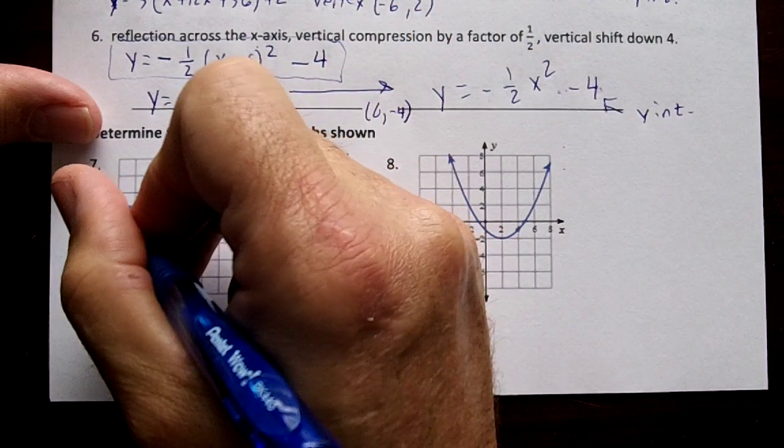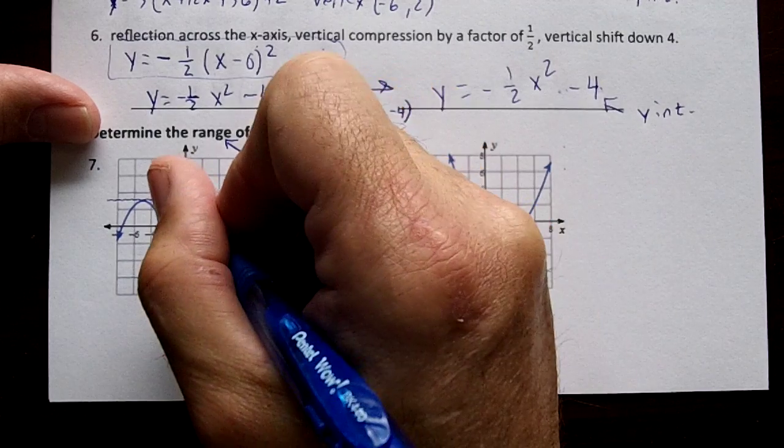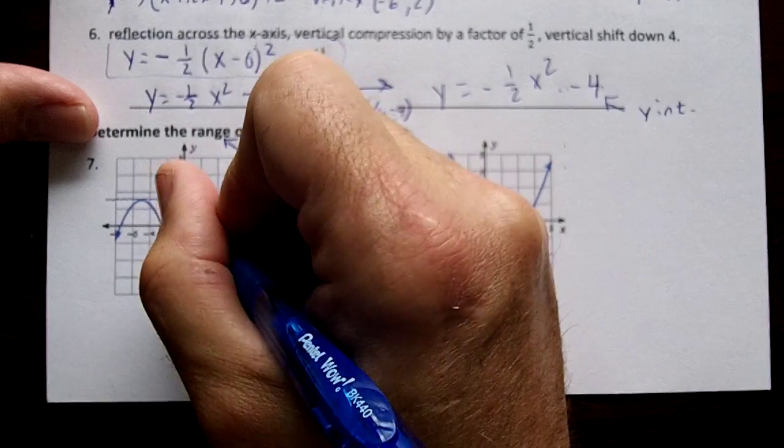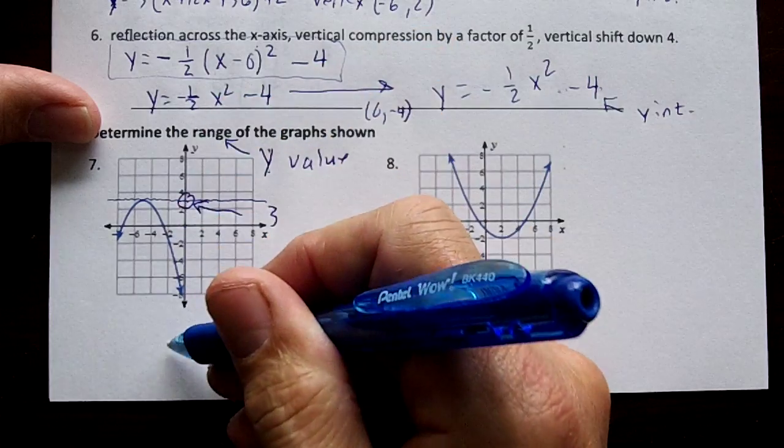So notice on this right here, if we draw a line right through here at three, it goes down, doesn't it?